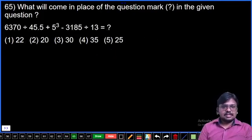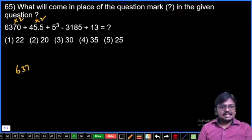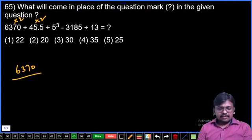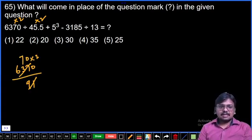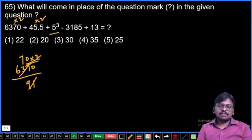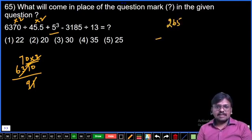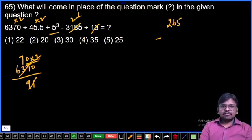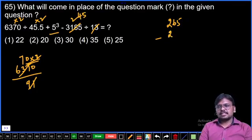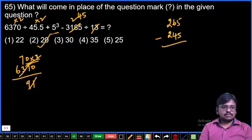Question 65: Calculate x value. 6370 by 45.5 into 2 into 91. Observe that 91 times 7 is 637. Simplify: 140 plus 125 equals 265. Divide by 13: 13 goes into 26 twice, remainder 5. 13 into 58 is 4 times, then 5 times. Total: 265 minus 245 equals 20. Second option.